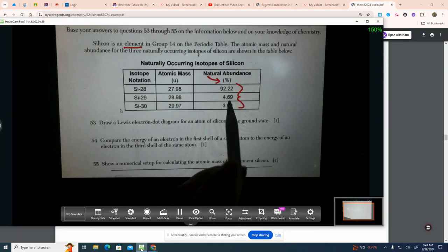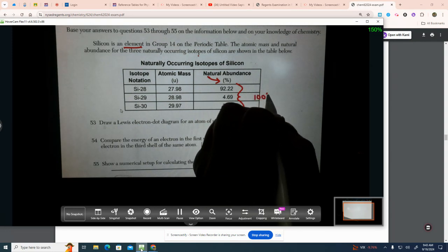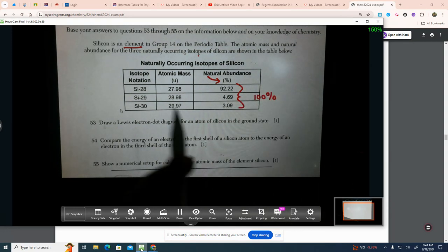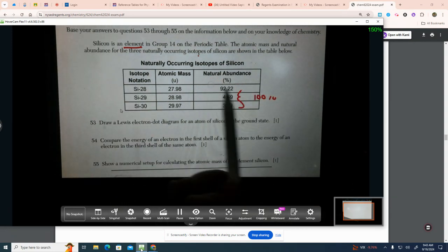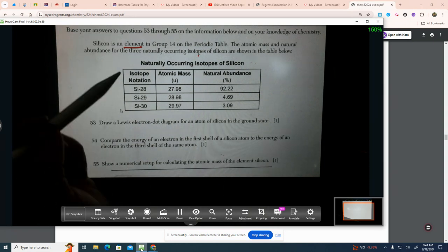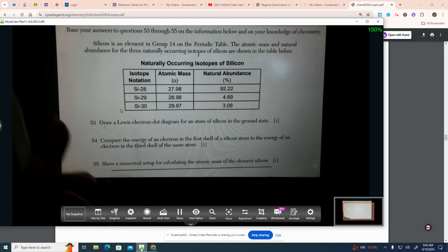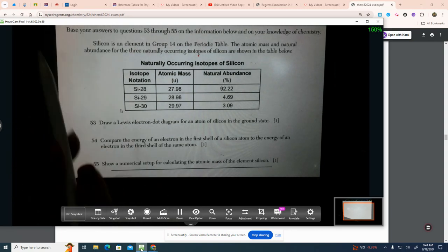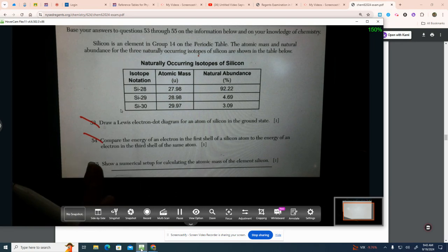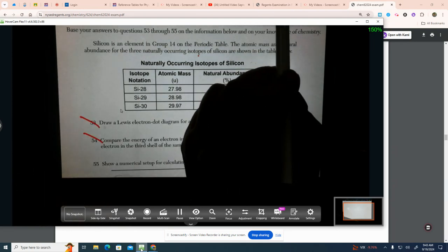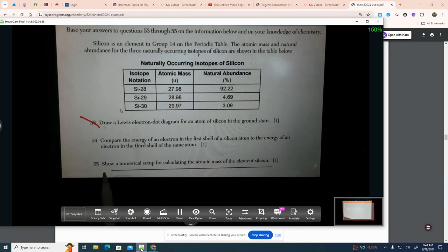These three will add to 100%. I'm going to erase that. I just want you to remember that from what we did before. Here's your masses, your three masses. This, number 55. You can't do 53 or 54 yet. You don't know them. Oh, actually, you do know 54. We could do that one next.